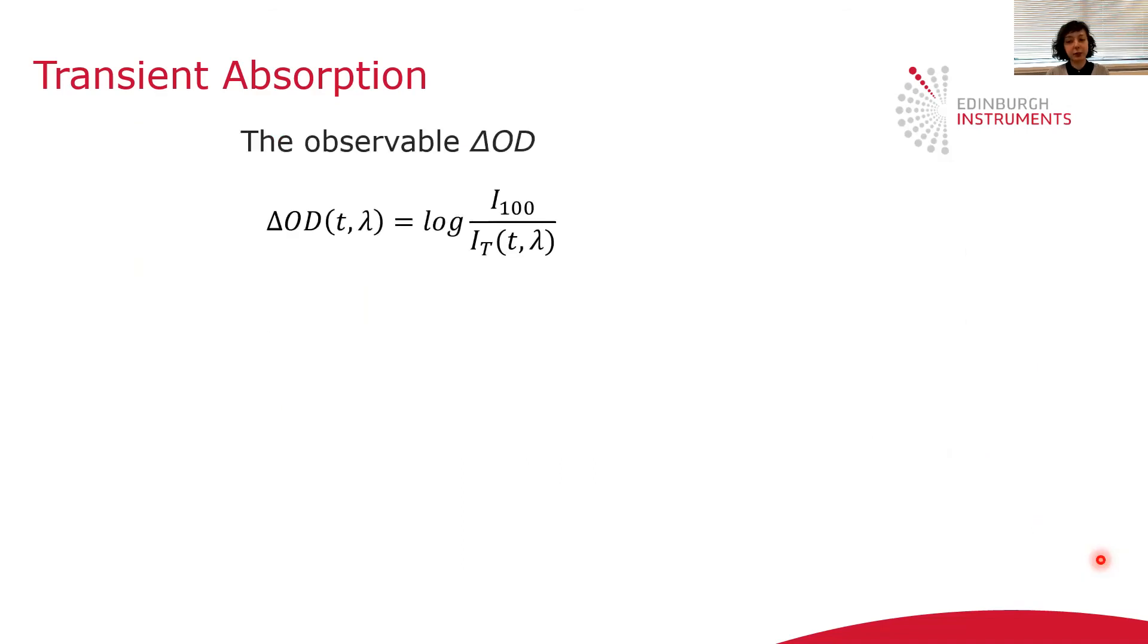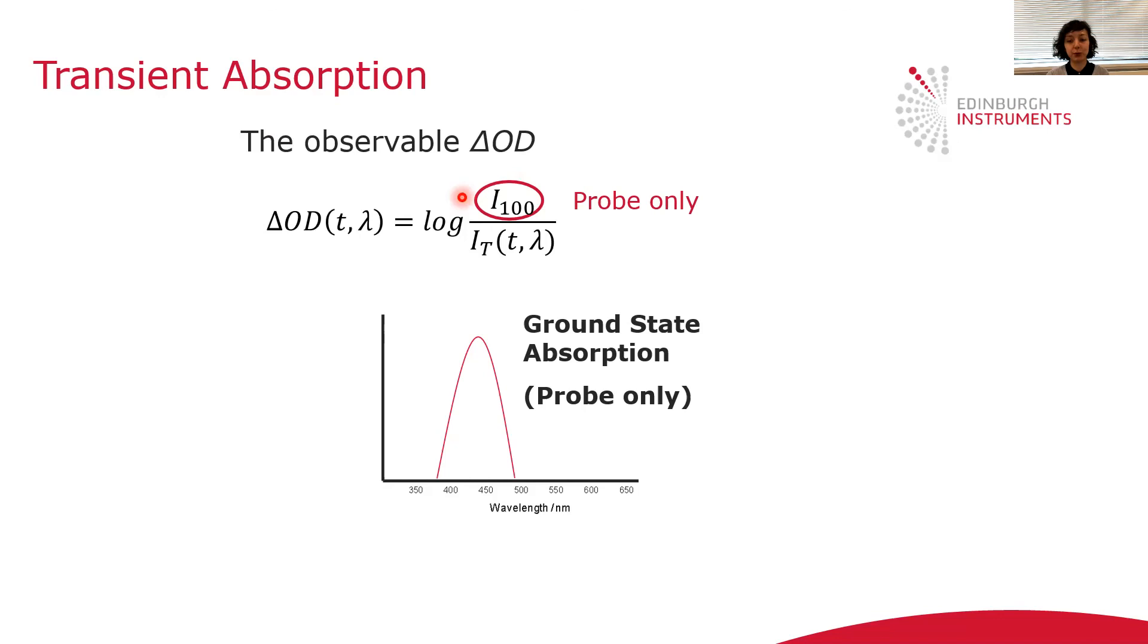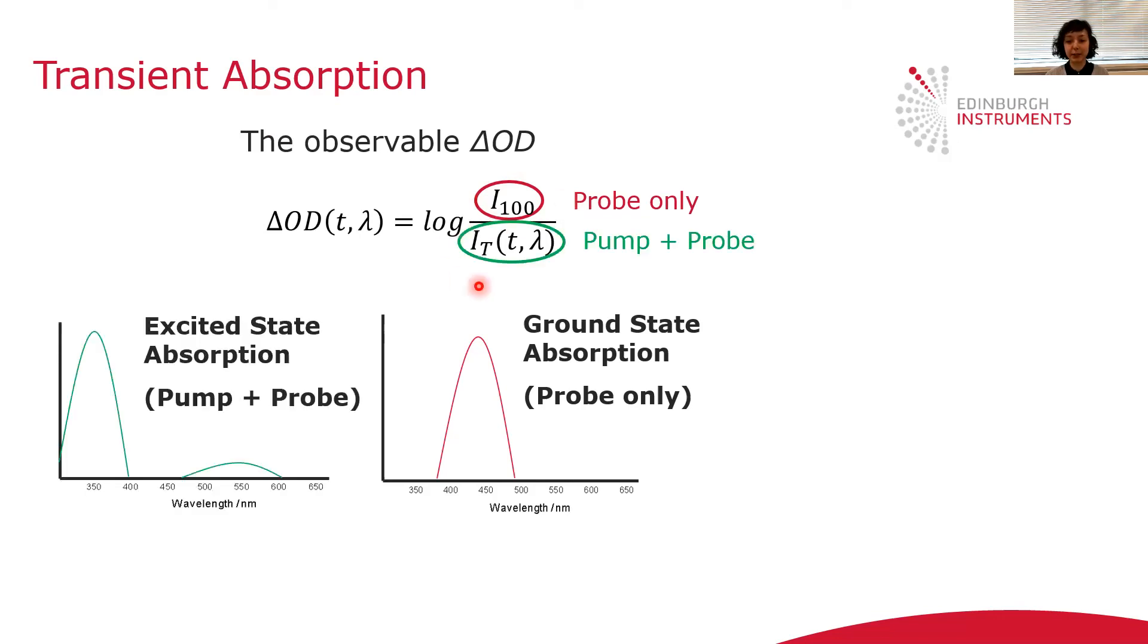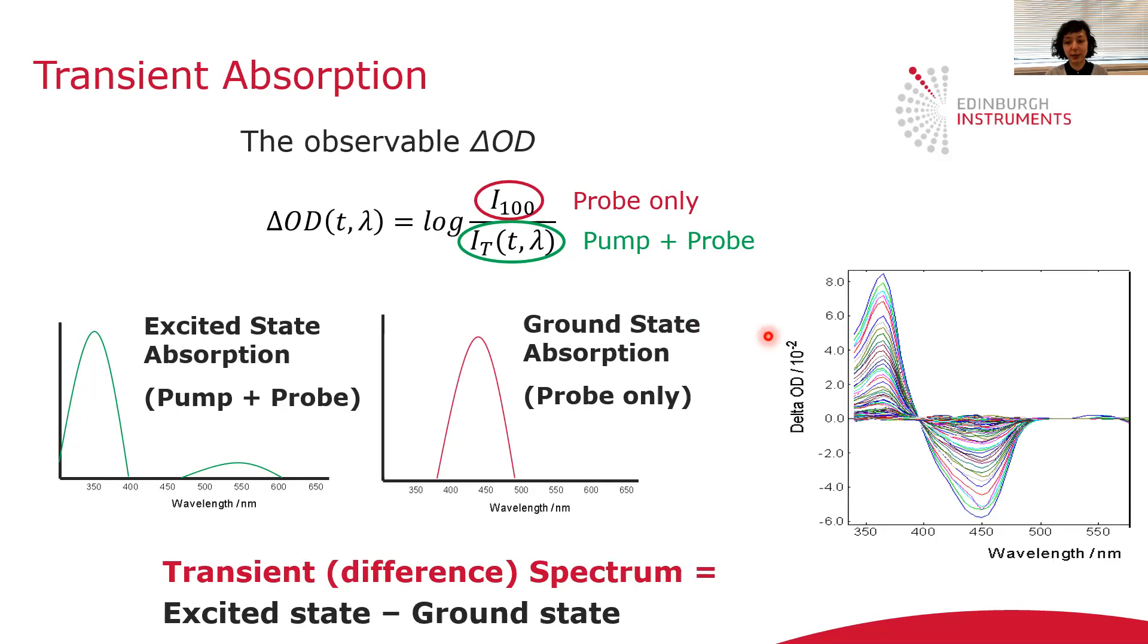We now look at the delta OD calculation in detail. It's this very simple equation where I100 is the ground state absorption which you obtain by passing the probe only through the sample. I say absorption is actually the intensity going through the sample. IT is the intensity going through the sample in the excited state that you obtain when you pass both the pump and probe beams through the sample. So the delta OD spectrum is simply a subtraction of the probe only absorption from the pump and probe absorption. This means that you typically end up with some negative components in the plots in the region where the ground state absorbs.